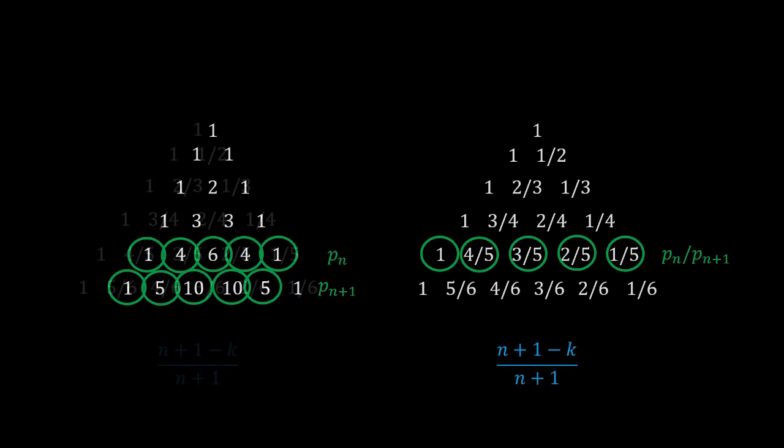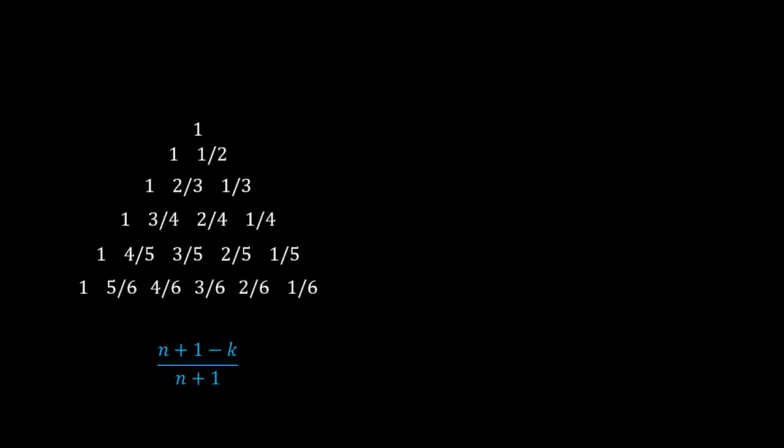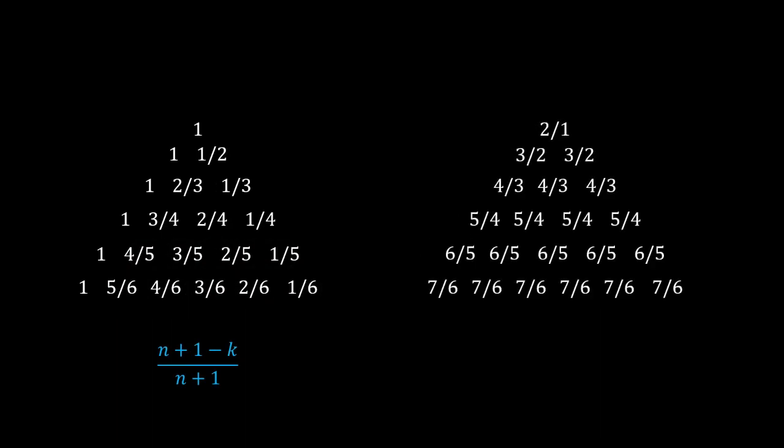And indeed, what we'll do is now we have the second triangle. And we construct a third triangle by taking a corresponding term and divide it by the term to its lower right. And this gives the corresponding term in the third triangle.